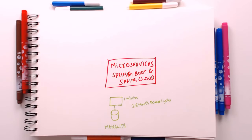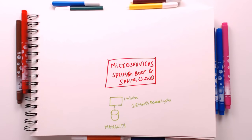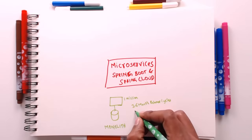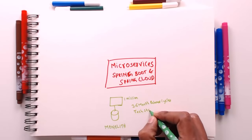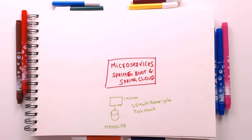The other problem with monolith architectures is that making changes is very very difficult because it's a single application. If you want to try out a new language or new framework, it's very very difficult. Your technology stack would become stagnant and your application will not evolve with the time, so introducing new technology and new architectures becomes really really difficult.